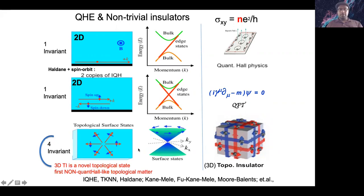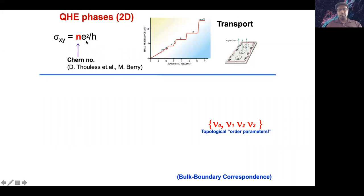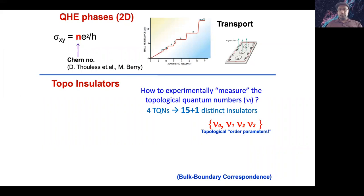There is no quantum Hall effect in the transport sense for the 3D topological insulator — it's a new beast, making it necessary to create new experimental techniques to study it. In 2D, the topological state is described by a Chern number or a Z2 invariant with some transport realization, but in 3D there are four topological invariants. That means in 3D there are 16 distinct insulating phases, 15 of which are topological in different ways.